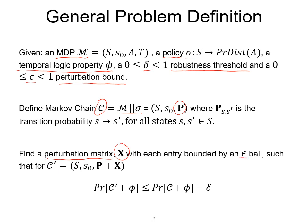Where the entries in this perturbation matrix are bounded by an ε ball, such that for the modified, for the new Markov chain C', which has perturbed probability matrix P + X, the probability in this new Markov chain to satisfy the formula φ is at least δ smaller than the probability to satisfy the formula φ in the original Markov chain, in the original system.